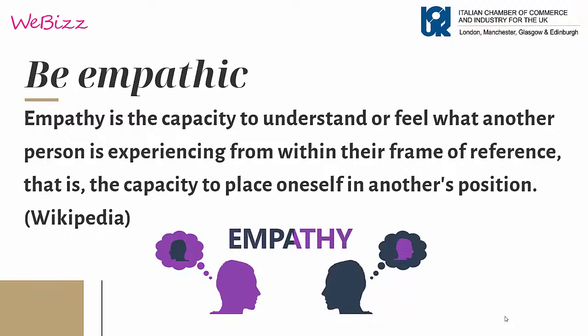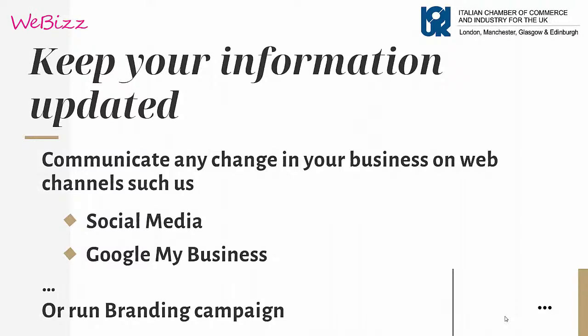You could start by updating your information. Tell your stakeholders about any possible change in your activity which could affect them. Tell your customers if there will be changes in your office hours or procedures. You can use your social media pages and your Google My Business profile to communicate any change or update, and you can also communicate updates with an advertising campaign — a branding campaign reaching your audience on relevant websites through banner ads.